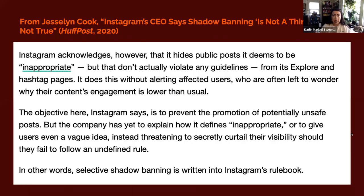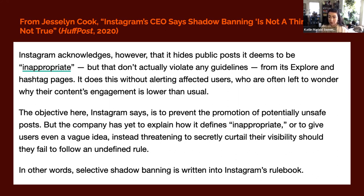An article we didn't read for this class but that's a useful companion piece is by Jessalyn Cook, titled 'Instagram CEO Says Shadow Banning Is Not a Thing — That's Not True,' published by HuffPost in 2020. It states that Instagram acknowledges it hides public posts it deems inappropriate — ones that don't actually violate guidelines — from its explore and hashtag pages. It does this without alerting affected users, who are often left to wonder why their content's engagement is lower than usual. The objective, Instagram says, is to prevent promotion of potentially unsafe posts, but the company has yet to explain how it defines 'inappropriate.' In other words, selective shadow banning is written into Instagram's rulebook.